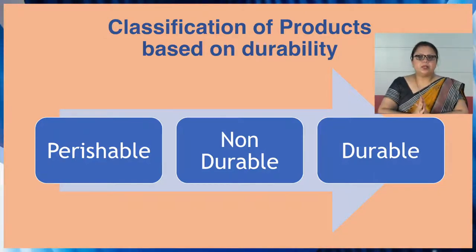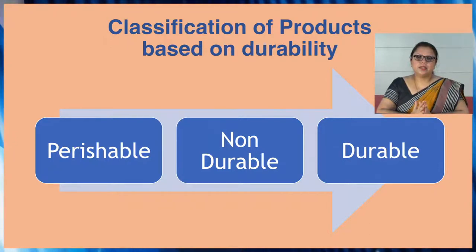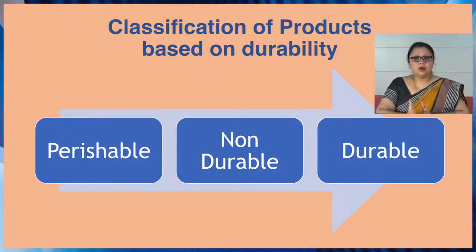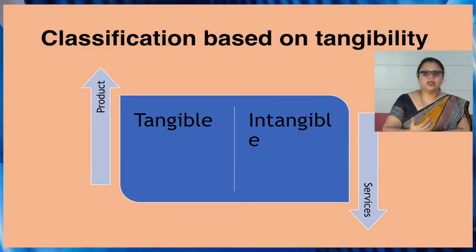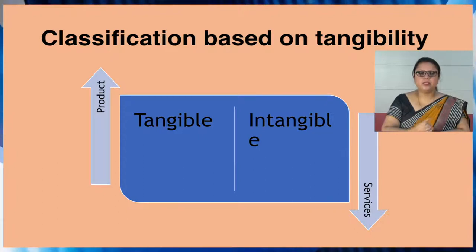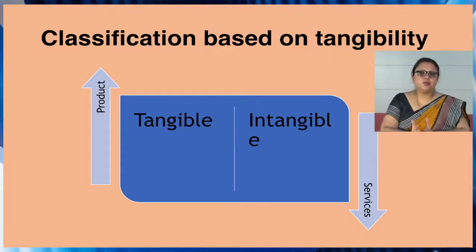Durable products have a long life and consumers may use them for several years — generally durable products last for around five years. Examples include TV, refrigerator, and furniture. Products can also be classified based on tangibility into two groups: tangible products, which we can see and touch, and intangible products, which include all kinds of services and ideas.